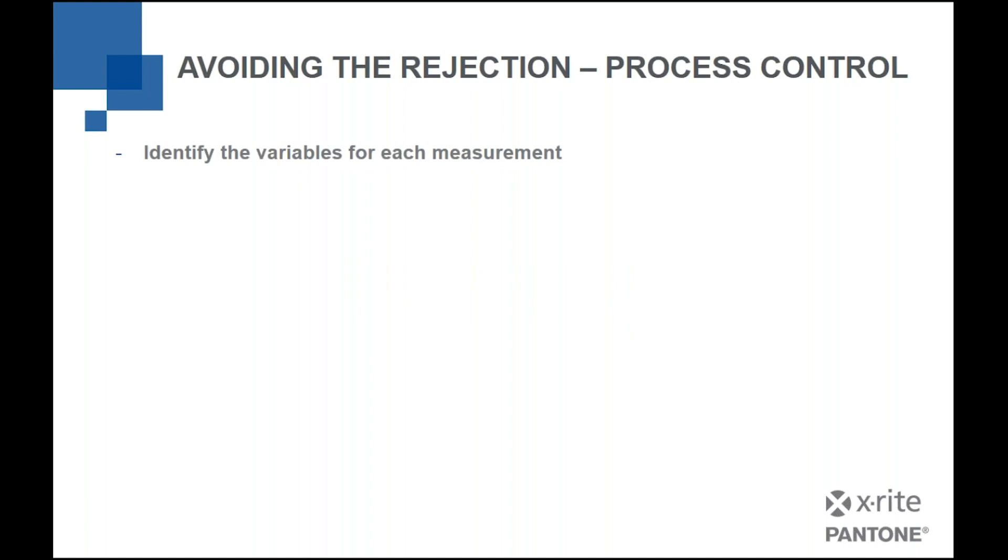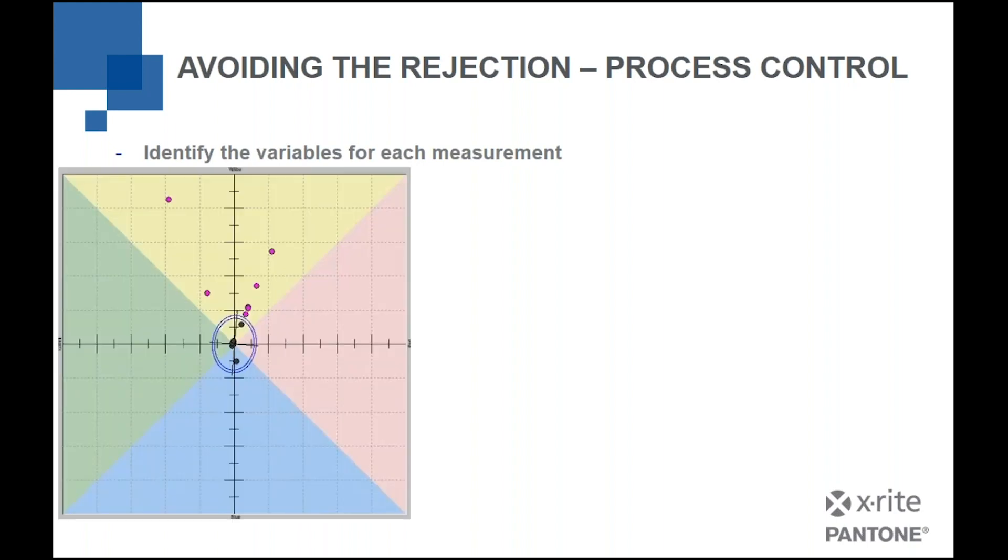The key here is about identifying the variables for each measurement. So if we are looking at and assuming we have a series of measurements, this is called a scatter plot in AB part of color space.